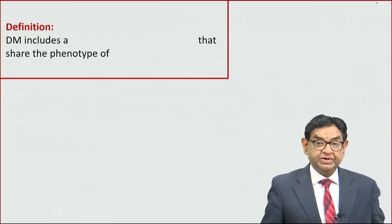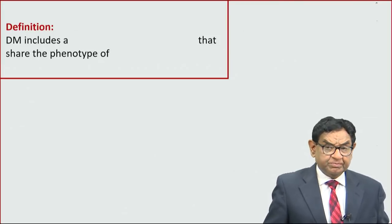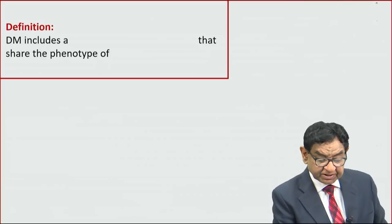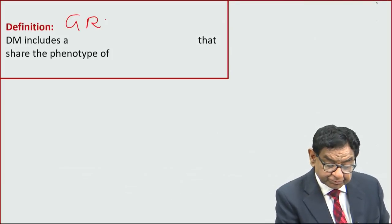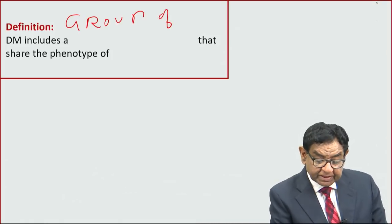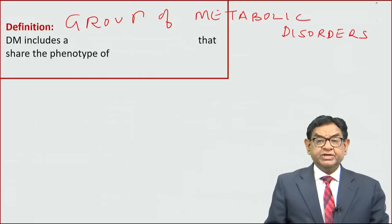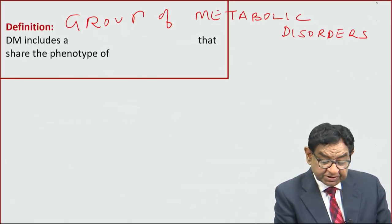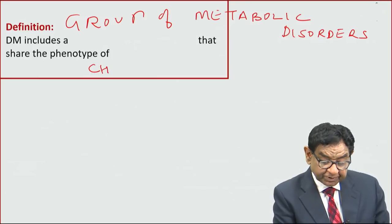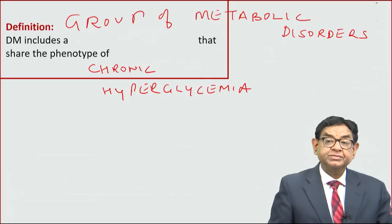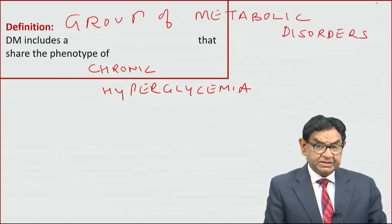Diabetes mellitus — first, let us see the definition. Point number one: it's not a single disease; rather it is a group of metabolic disorders. What is common in all of them is that they share one common phenotype — chronic hyperglycemia.